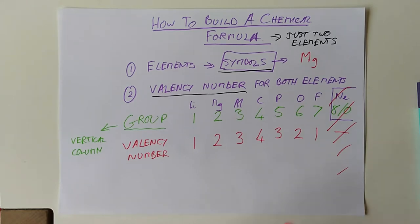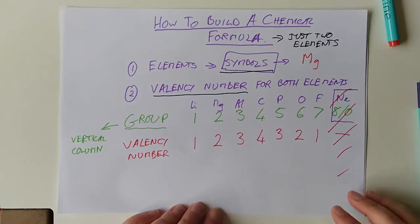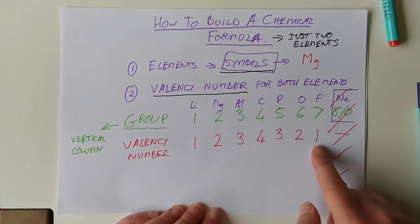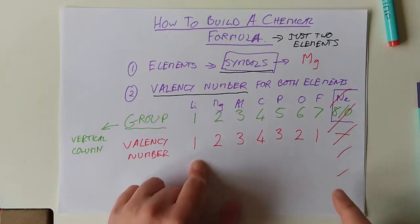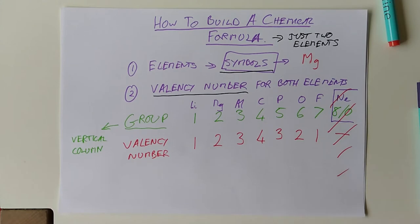These are the groups and you need a valency number. Now, the valency number applies to every element in that particular group. So, everything in group 1 will have a valency of 1, and then everything in group 2 is 2, 3 is 3, 4 is 4. Nice and simple so far.